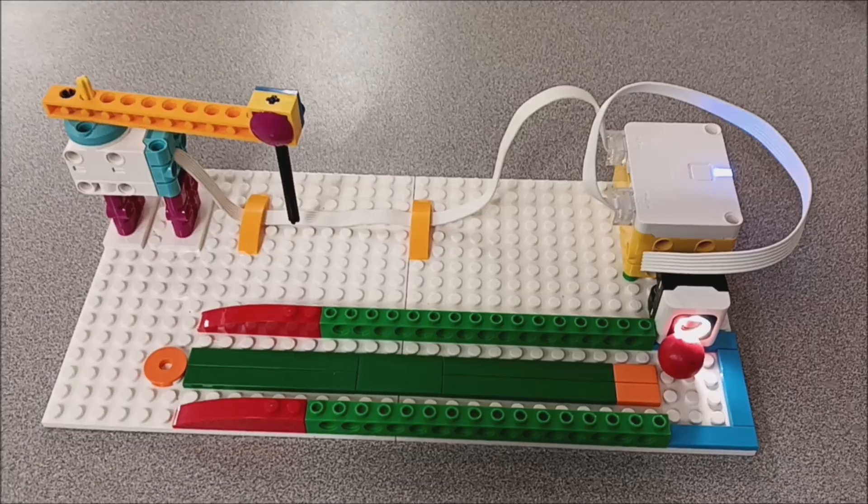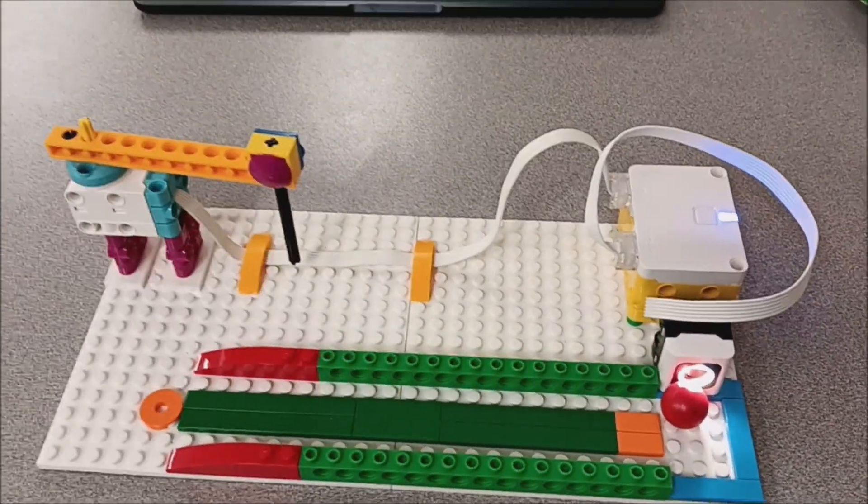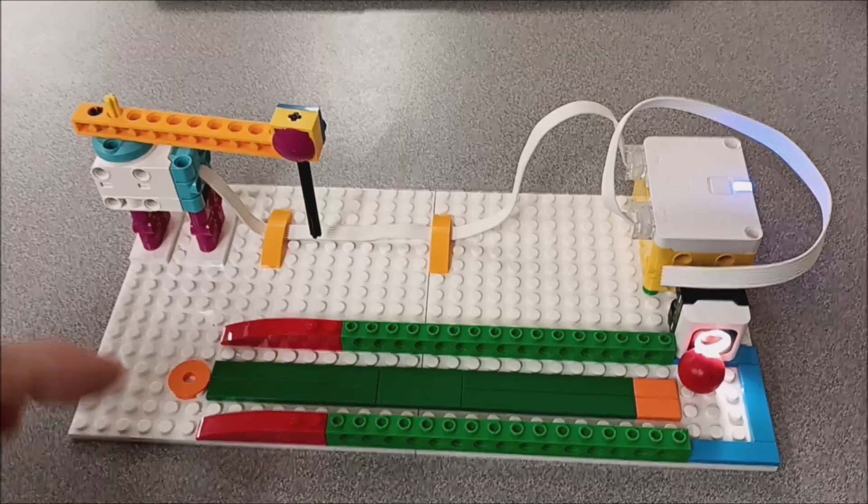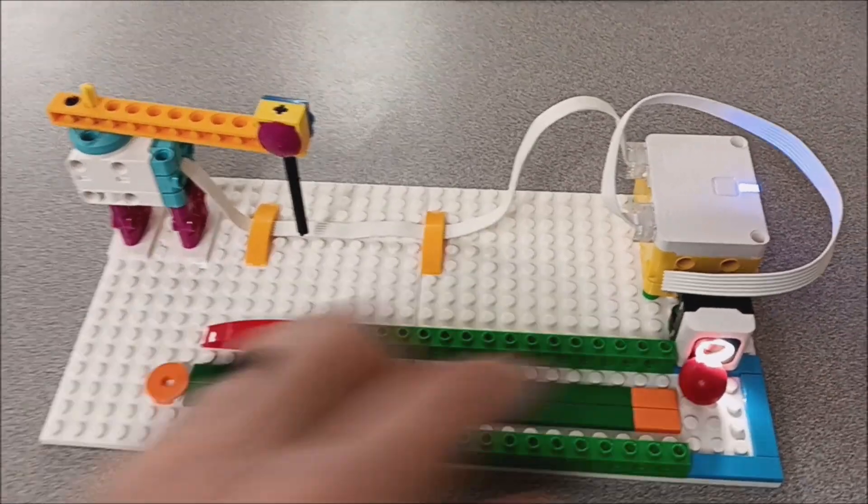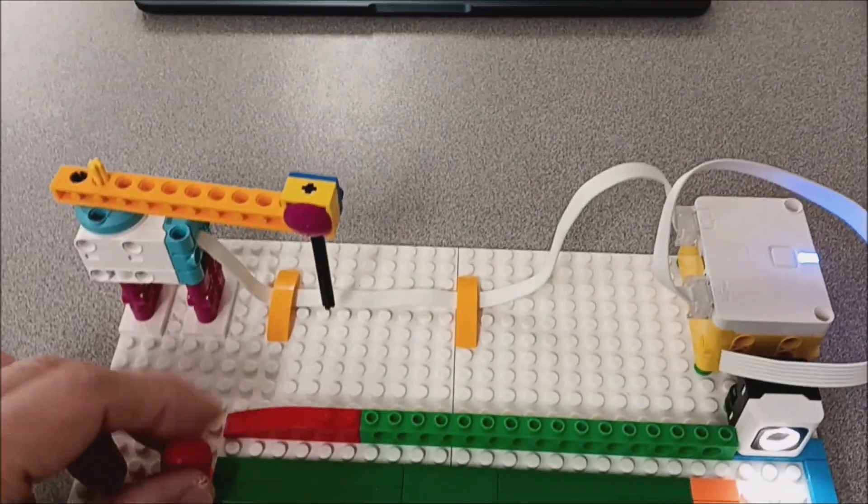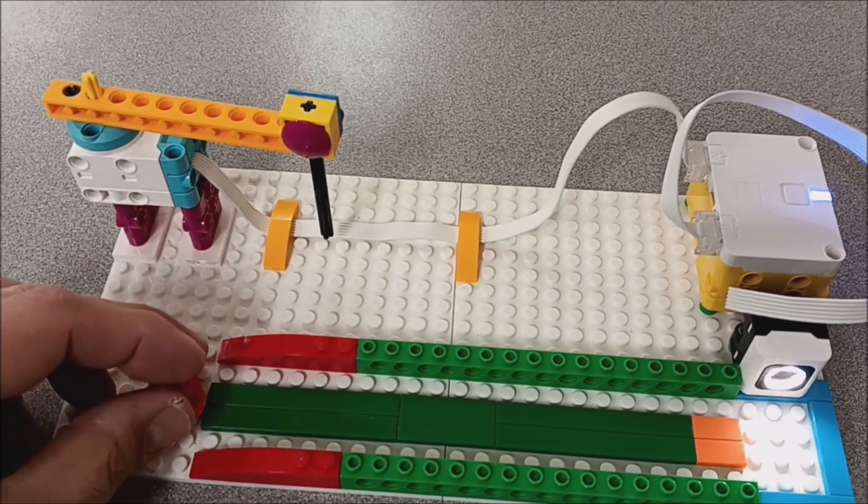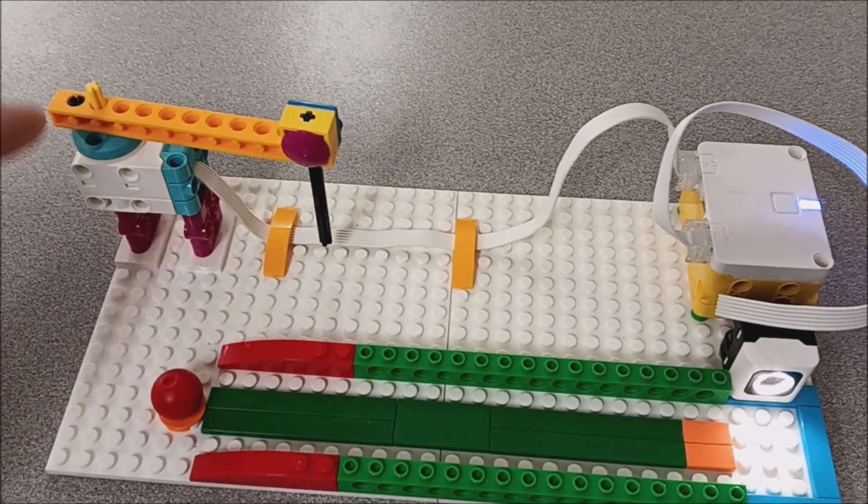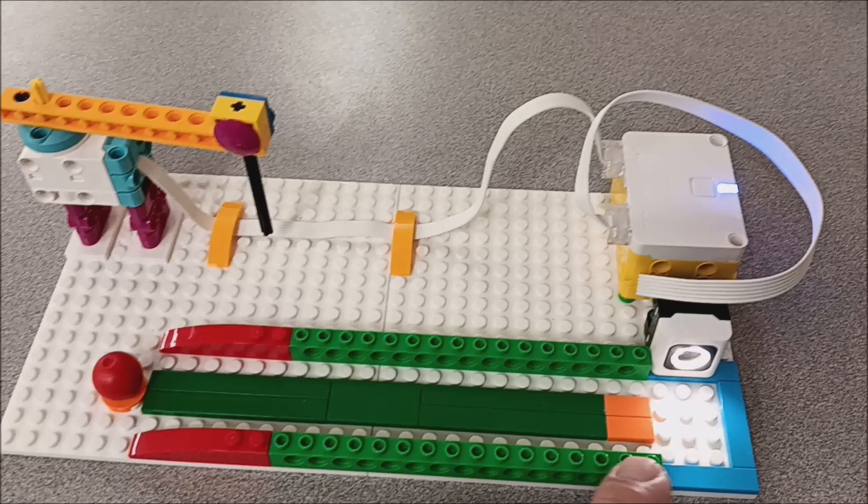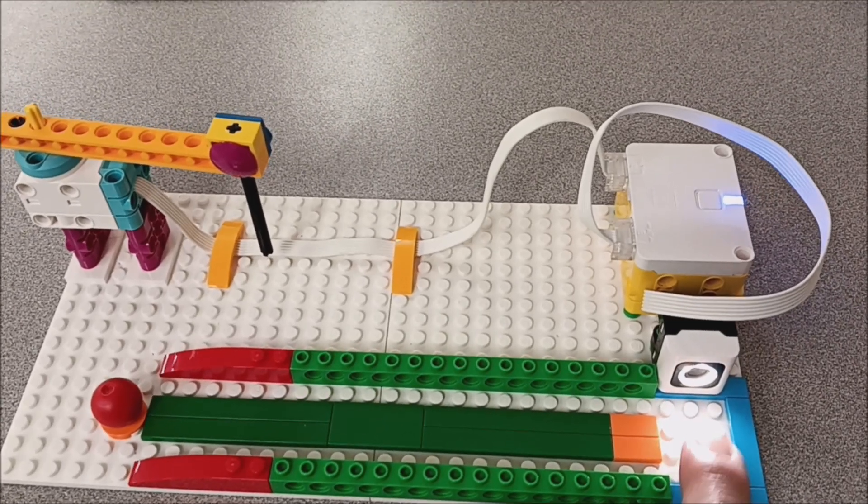Like I always do, I'll leave you the building instructions in the description, but here's the basic premise of this game. This red ball is going to start right here, and what this arm is going to do is swing around to hit this ball, and the target is supposed to be right here.